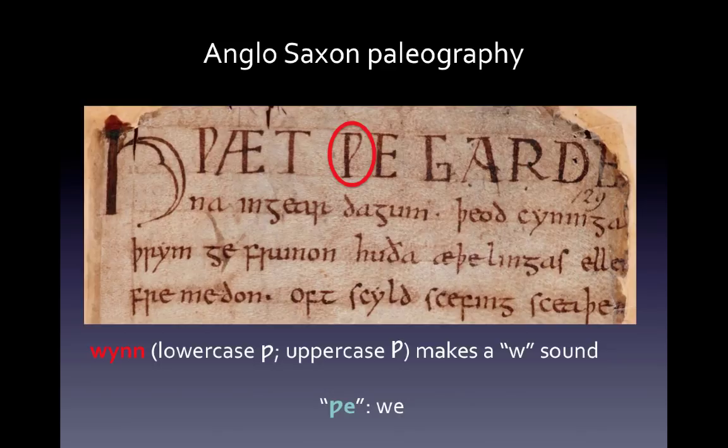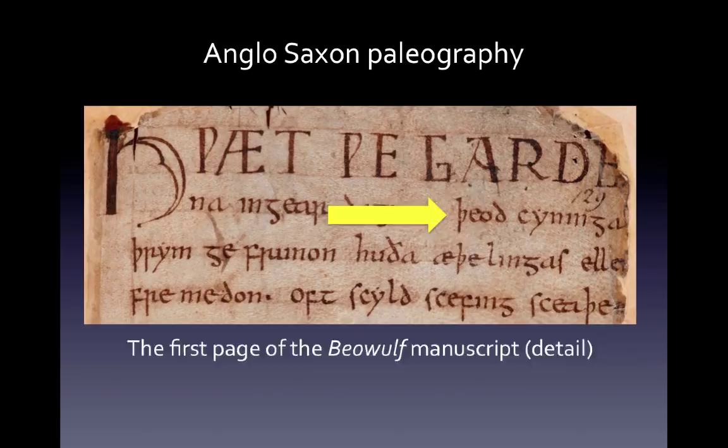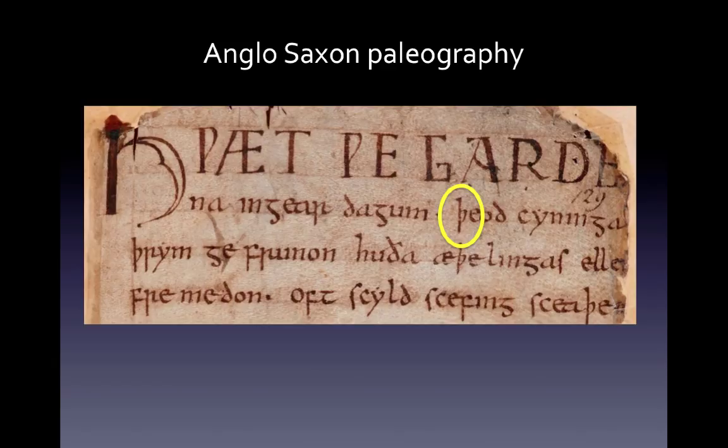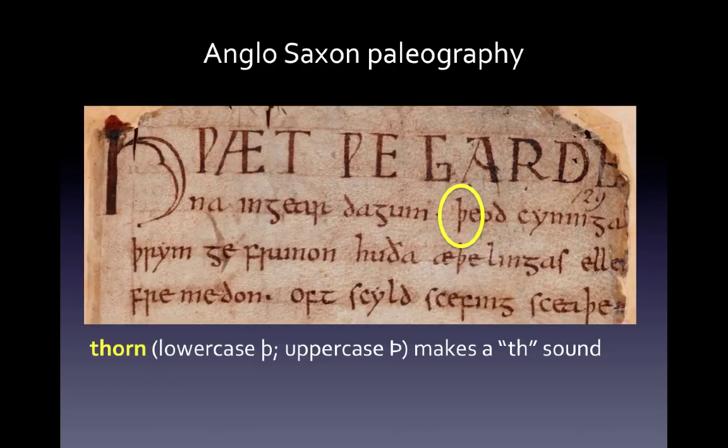Now look at the second line, just to the right of Wyn. You see a letter that also looks a little bit like a P, but its stem goes as high up as the tail goes down. That letter is Thorn, which makes a Th sound. The word of which it is a part is 'þēod,' which is a noun that means 'nation' or 'tribe.'